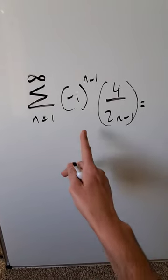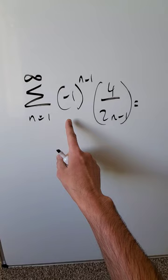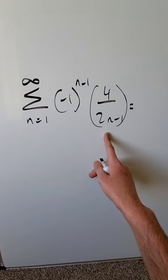Let me introduce you to this very interesting series. We have an infinite series, n equals 1 up to infinity, minus 1 to the power of n minus 1, times 4 divided by 2n minus 1.